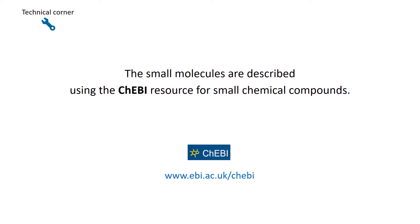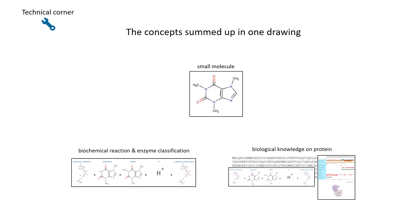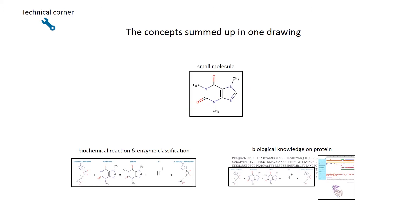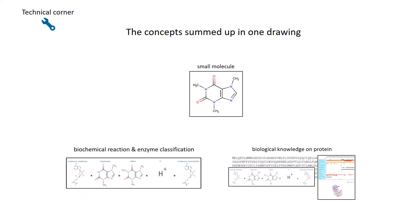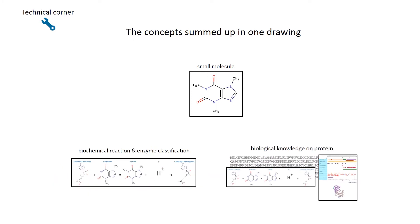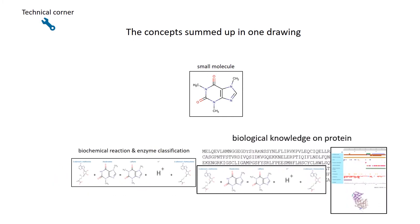The key concepts used in this tutorial are summarized in this drawing. Let's say we have the name or structure of a small molecule. Then we are interested in biochemical reaction and enzyme classification data, and finally we want to relate this data to general biological knowledge about proteins, including functional characterization, 3D structure, interaction data, etc.